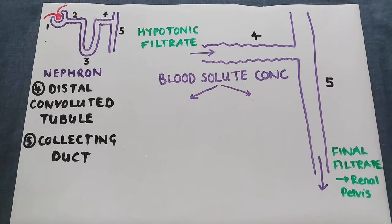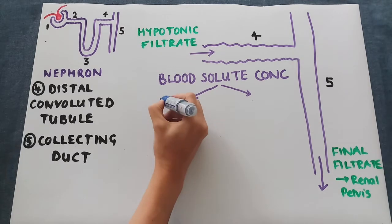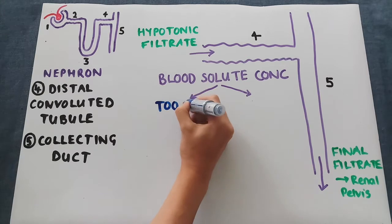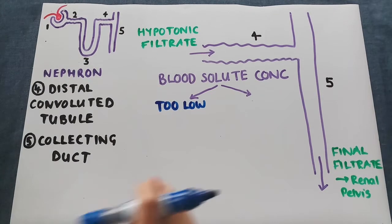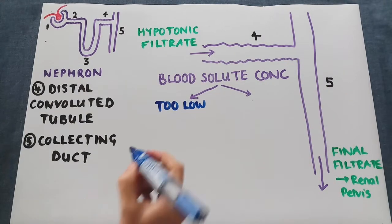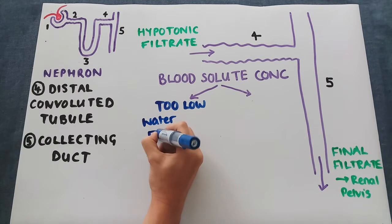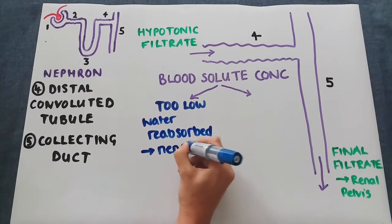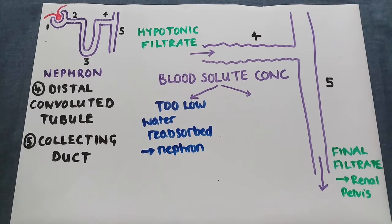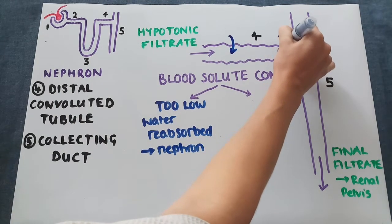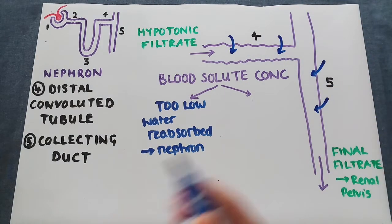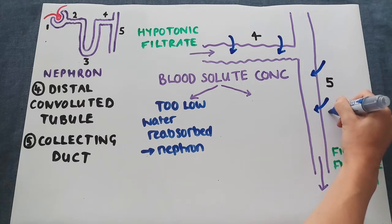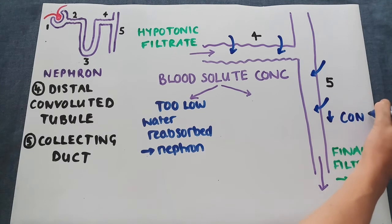We're going to look at two different scenarios. The first is if the blood solute concentration is too low. In this case, these two areas become more permeable to water and the water is reabsorbed. This is because the solute concentration in your surrounding tissues and blood is too low — it has too much water in it. Therefore, water is reabsorbed back, meaning the final filtrate decreases in concentration and becomes more dilute.